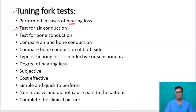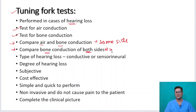Tuning fork tests test air conduction and bone conduction. In Rinne's test we can compare air conduction and bone conduction on the same side, and in Weber's test we can compare the bone conduction of both sides — the right with the left. With the tuning fork we are trying to find out the type of hearing loss, whether it is conductive or sensorineural.